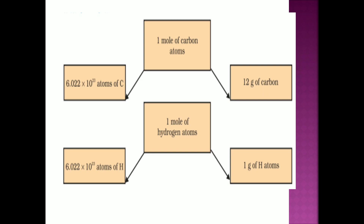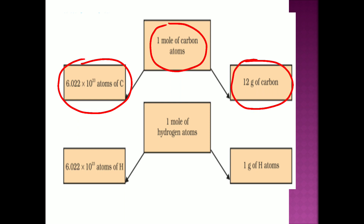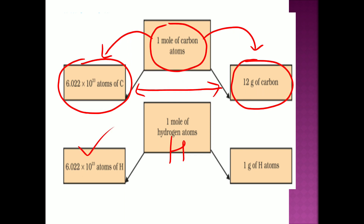The relation is: 1 mole of carbon = 6.022 × 10²³ atoms of carbon, and in terms of mass, it is 12 grams. So 6.022 × 10²³ atoms of carbon equals 12 grams. Similarly, 1 mole of hydrogen atom means 6.022 × 10²³ hydrogen atoms, and in terms of mass it is 1 gram, because hydrogen's atomic mass is 1 AMU — so expressed in grams, it is 1 gram, its gram atomic mass.